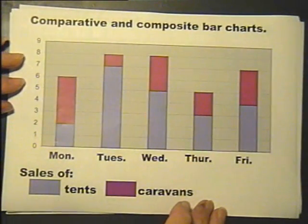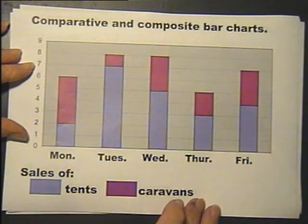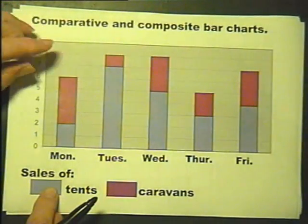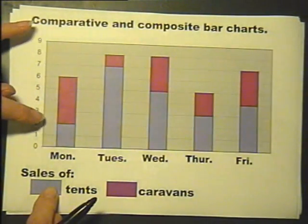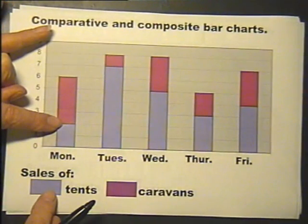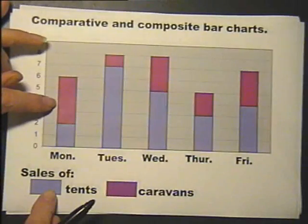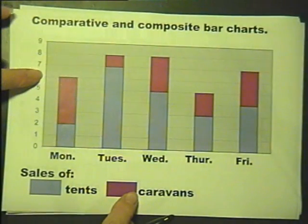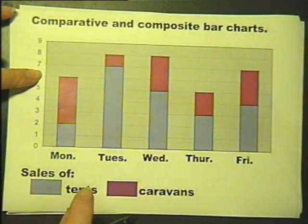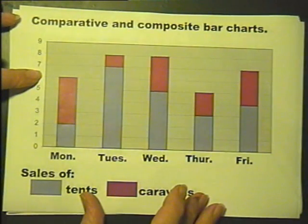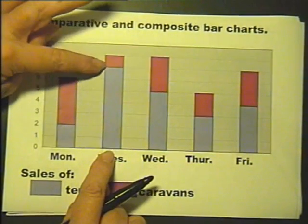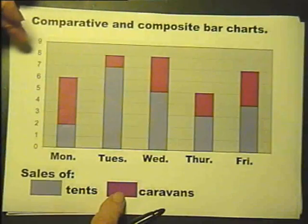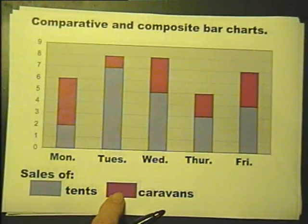Now this is a composite bar chart, but it's exactly the same information as the previous one — we've got sales of tents and caravans, and the bar is built on top. So you can read three things from this: you can say 2 tents sold on Monday, and 4 caravans sold on Monday, and the height of the bar is the total sales of tents and caravans. Tuesday: 7 tents, 1 caravan, and total sales of 8. So it's just the same information but can be read a different way.